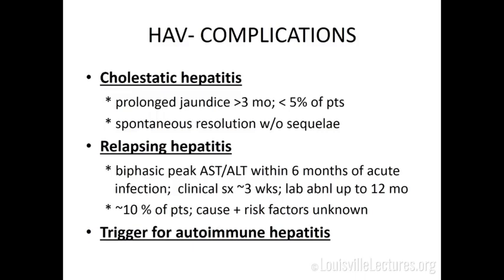An interesting complication is relapsing hepatitis — a biphasic peak of disease where you have the acute illness, get better, then within four to seven weeks — sometimes up to six months — you have what seems like a relapse with biochemical markers rising and symptoms returning. It's thought to be an immune response to continuing antigenic stimuli. Clinical symptoms in the relapse phase last about three weeks and lab abnormalities can persist up to 12 months. This can occur in up to 10% of patients, so be aware of this possibility.